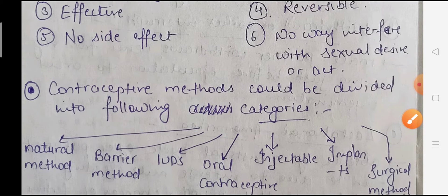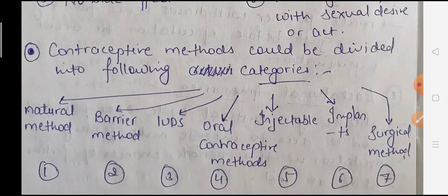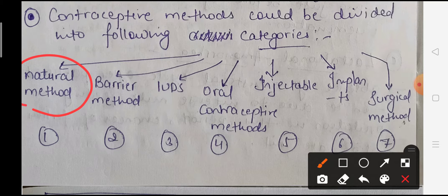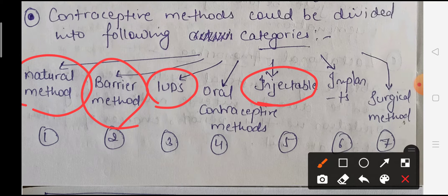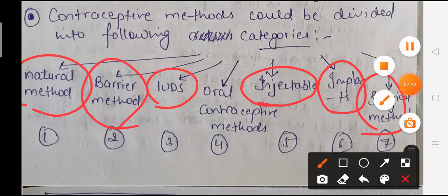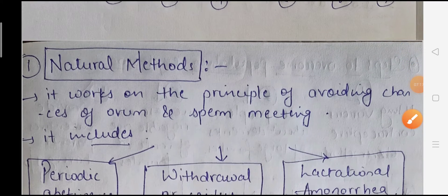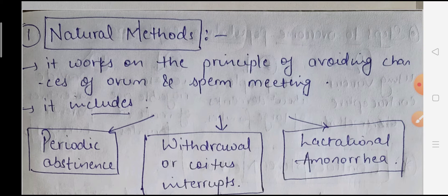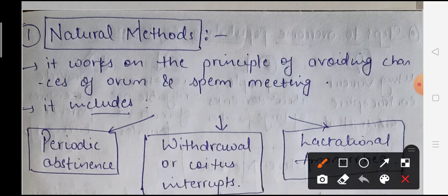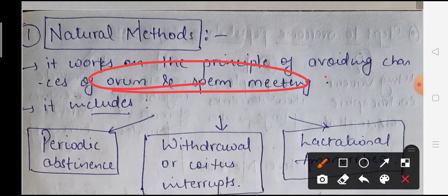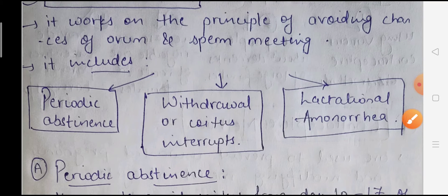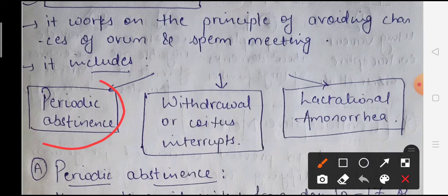Contraceptive methods can be divided into the following categories: natural methods, barrier methods, IUDs (intrauterine devices), oral contraceptive methods, injectables, implants, and surgical methods. The first category is natural methods, which work on the principle of avoiding the chances of the ovum and sperm meeting. Natural methods include three types: periodic abstinence, withdrawal or coitus interruptus, and lactational amenorrhea.